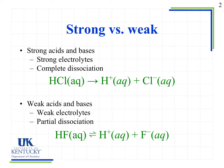When we have weak acids and bases, we see that those are weak electrolytes, meaning they do not dissociate completely in water. When we see those, we see our equilibrium arrow — that is the reaction running in the forward and the reverse direction until it gets to chemical equilibrium. So we see a partial dissociation.